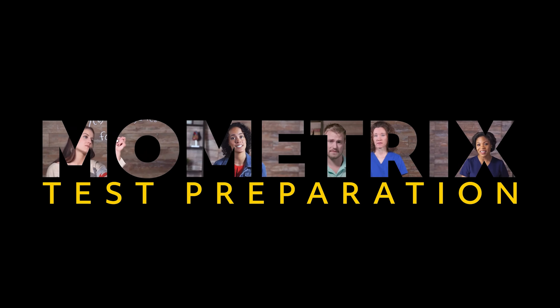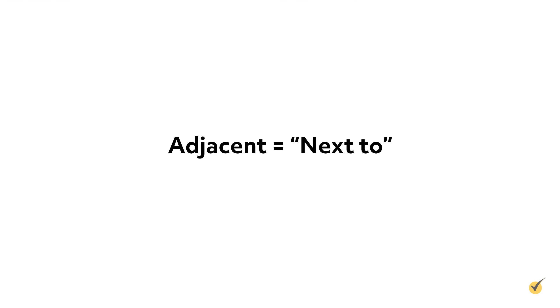There are many classifications for types of angles and the different relationships that angles have with each other. One such relationship is adjacency. The word adjacent means next to, so it makes sense that two angles are considered adjacent if they are next to each other.